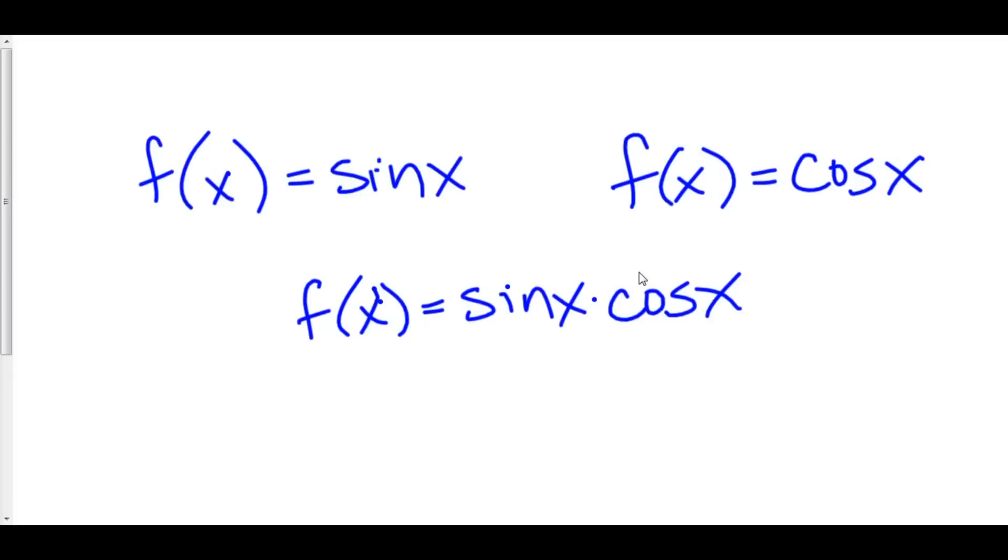Tangent of x, not continuous. There's a vertical asymptote a bunch of times. Secant of x, not continuous. And really, those are because we're taking, for example, tan x is sine x over cosine x. It's this cosine x in your denominator that makes tan x not continuous.